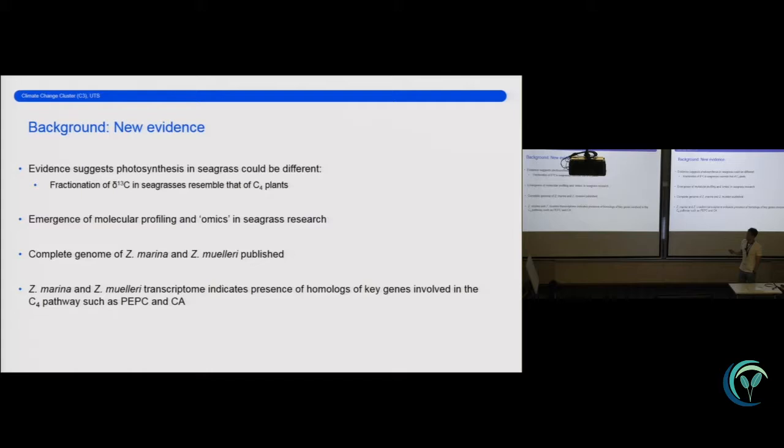And in addition, due to the emergence of molecular profiling tools such as proteomics, transcriptomics, and as Peter mentioned, this has basically given us a more in-depth view of what is actually happening in the genes within Zostera marina and Zostera muelleri. And as the transcriptome of these two seagrass species has been published, we were able to see the presence of some of the key genes involved in the C4 pathway, such as phosphoenolpyruvate carboxylase and carbonic anhydrase.